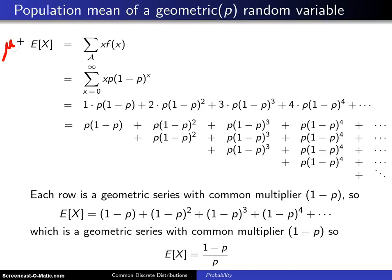We are after the population mean mu, which is the expected value of X. Because we have a discrete distribution, we sum over the support script A of x times f of x. This script A runs from 0 to infinity, so those are the limits on the summation. We have x multiplied by the probability mass function, and here it is.